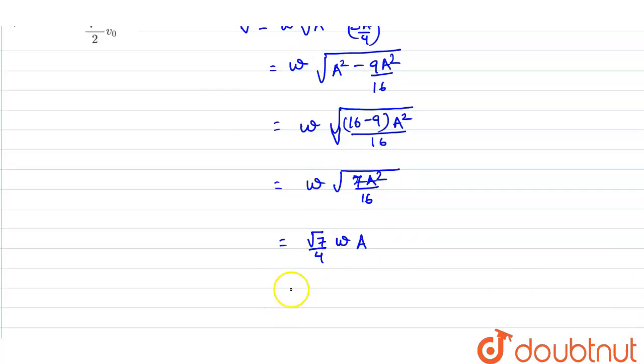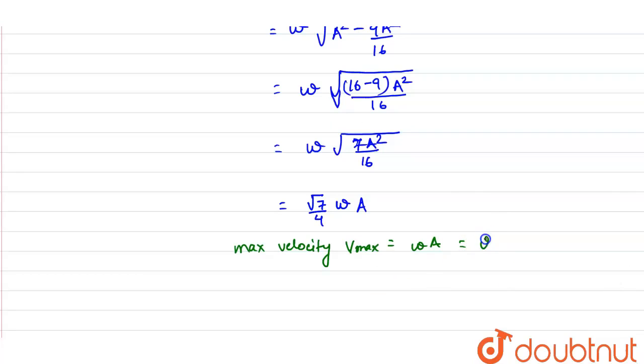Now in SHM, the maximum velocity V max is equals to omega times A and which is given in the question as V0.